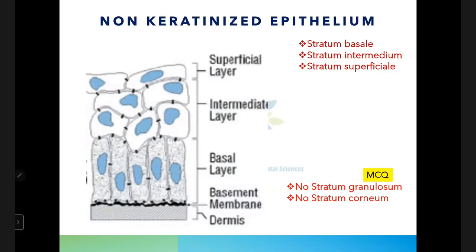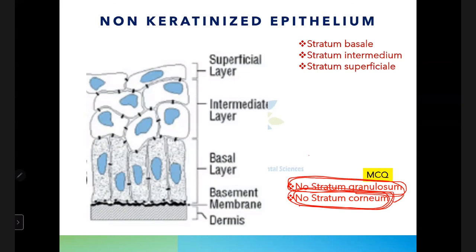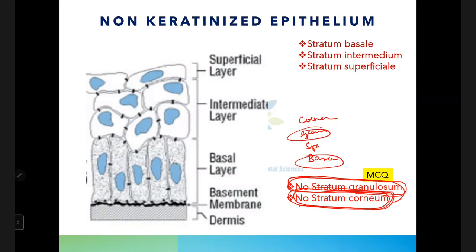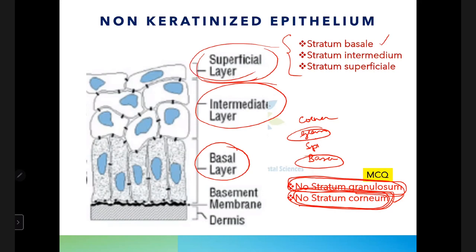Non-keratinized epithelium has three layers: stratum basale, stratum intermedium (which has spinous cells but no characteristic prickly appearance due to less intercellular space), and stratum superficiale. There is no stratum corneum or stratum granulosum. In keratinized areas like gingiva and hard palate, long connective tissue papillae are present, while in alveolar mucosa the papillae are quite low.